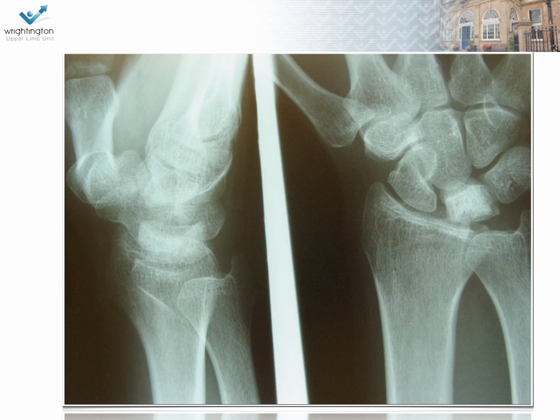So this is a plain radiograph of an adult male. It presents with a six-month history of wrist pain and a decreased range of wrist extension. Now describe to me what you see.